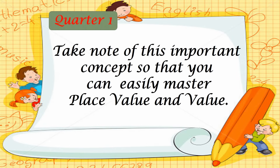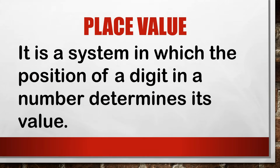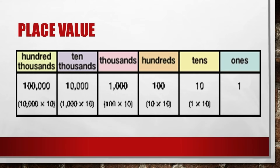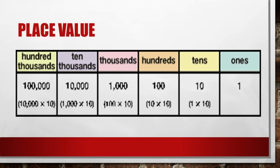Take note of this important concept so that you can easily master place value and value. What is place value? Place value is a system in which the position of a digit in a number determines its value. Examine this table — it shows that the place value starting at the right has the smallest value: ones, tens, hundreds, thousands, ten-thousands, and hundred-thousands.